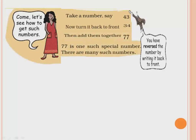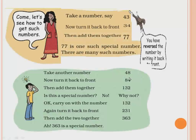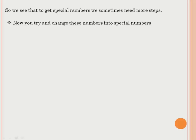So 77 is one such special number. Take another number, 48. First reverse it to get 84, then add: 48 plus 84 equals 132. Reverse 132 to get 231 — is that a special number? No. So we proceed. Take 132, reverse it to get 231, add them: 132 plus 231 equals 363. And 363 is a special number because it reads the same from both sides.